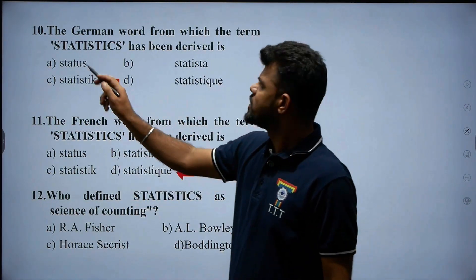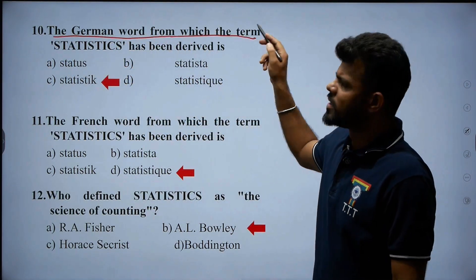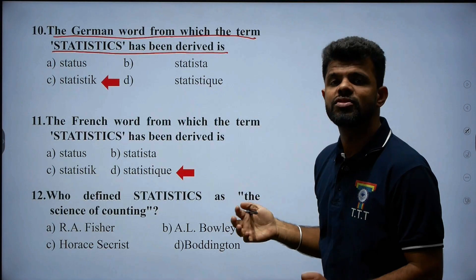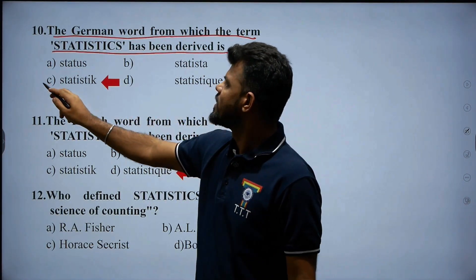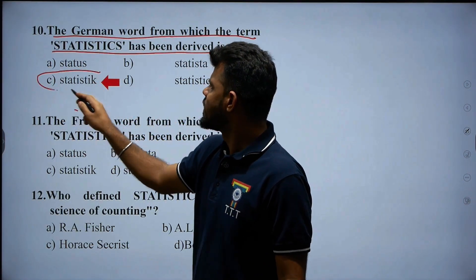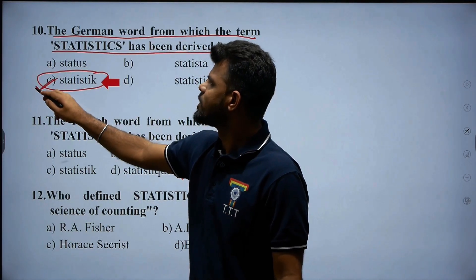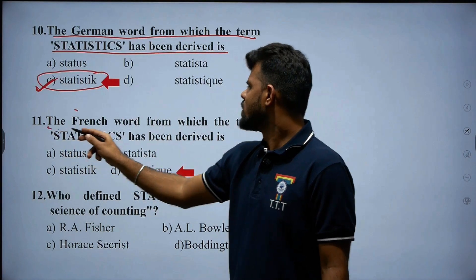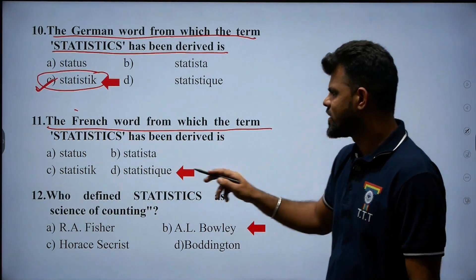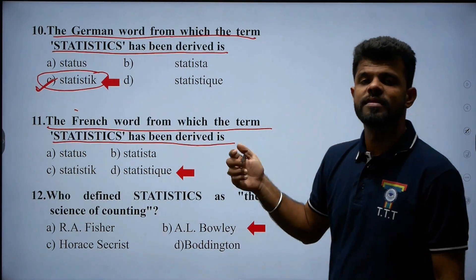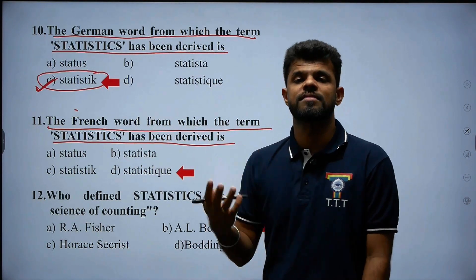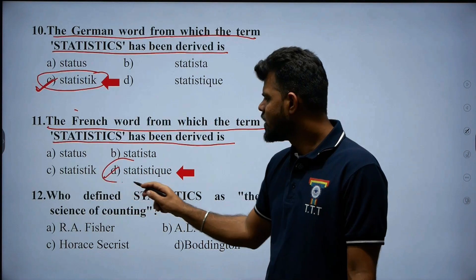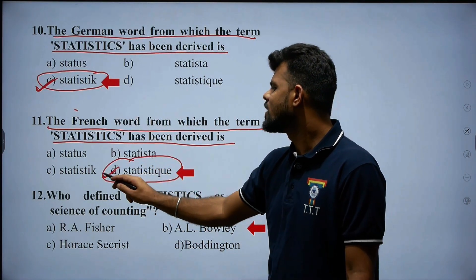In German, the term statistics has been derived from the word 'statistic.' Option C — statistic — is the right answer. For question number eleven, the French word from which statistics has been derived is 'statistique.' Option B — statistique — is the right answer.